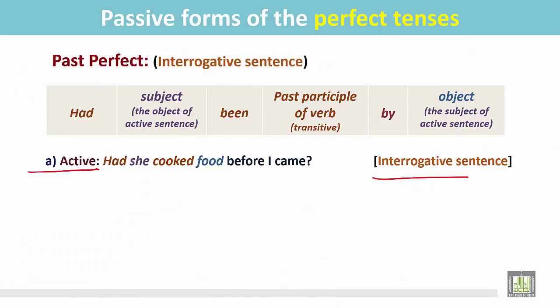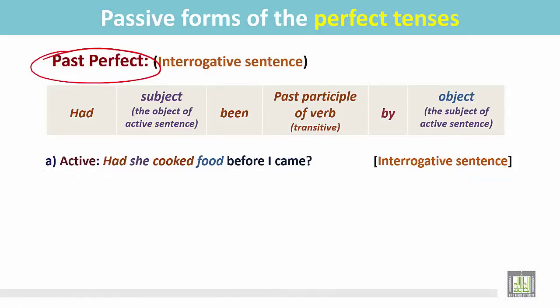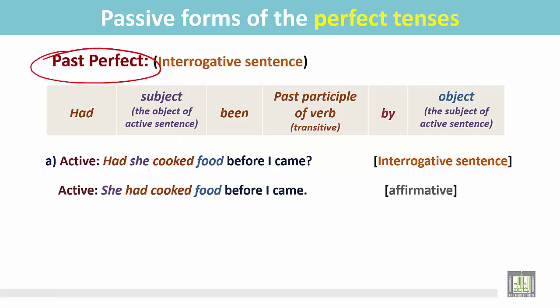This is an active interrogative sentence in the past perfect: 'Had she cooked food before I came?' She cooked what? 'Food' — it is the object for the verb 'cooked', and there is no object for the verb 'came'. Now change this interrogative sentence into a statement: 'She had cooked food before I came.'